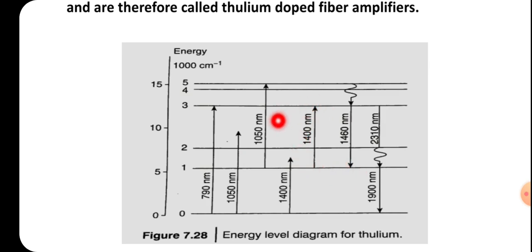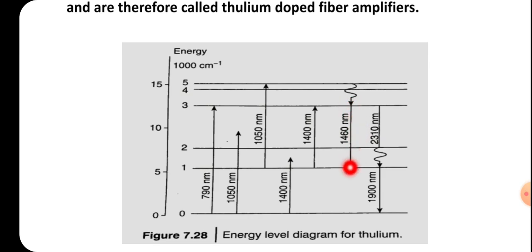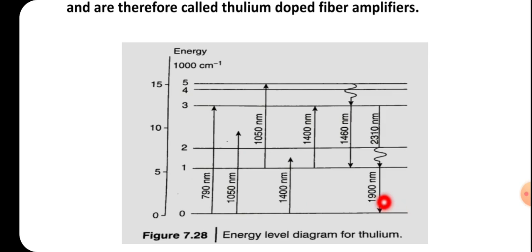To increase electrons in the third energy state, a second pump source of 1050 nanometer is used. When this pump energy is applied, electrons from the first energy state jump to the fifth energy state. But that is an unstable or metastable state, so they decay to the third energy state. In the presence of the pump, these electrons in the third state undergo stimulated emission and decay to the first energy state, where the lifetime is approximately 11 millisecond, making electrons more stable there.